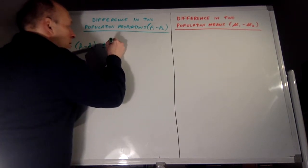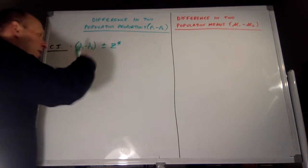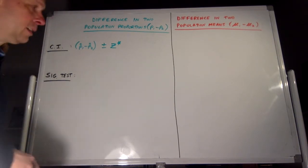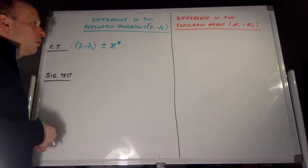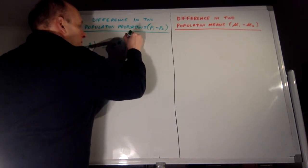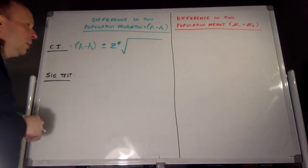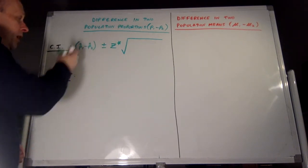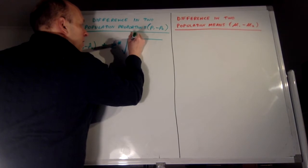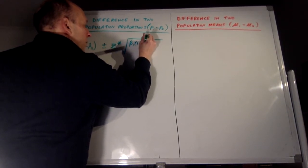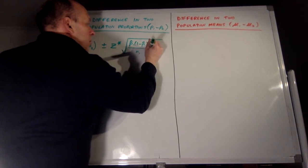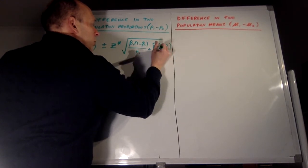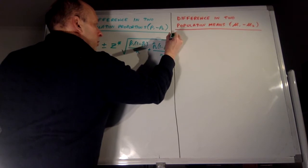Our critical value here is going to be a z* value — z goes with p, or proportions, and t goes with x-bars, or means. So for proportions, we're going to use a critical z. We can't use the standard deviation of the sampling distribution because we don't know what p1 and p2 are — if we did, we wouldn't need to estimate it with a confidence interval. So our standard error is going to be: the square root of p-hat 1 times (1 minus p-hat 1) over n1, plus p-hat 2 times (1 minus p-hat 2) over n2.